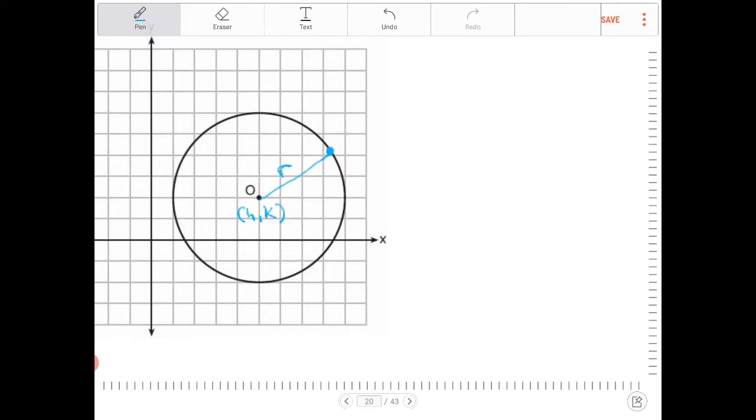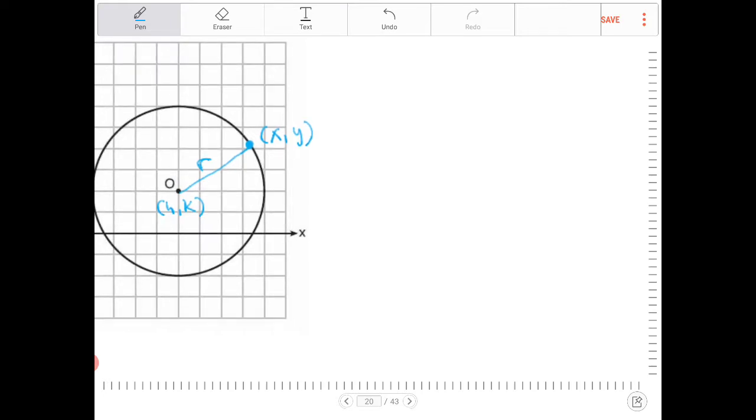which we're calling r. If you forget how to write the equation of a circle, just understand this: How do you find the distance between two points? You have to use the Pythagorean theorem or the distance formula, however way you want to look at it.